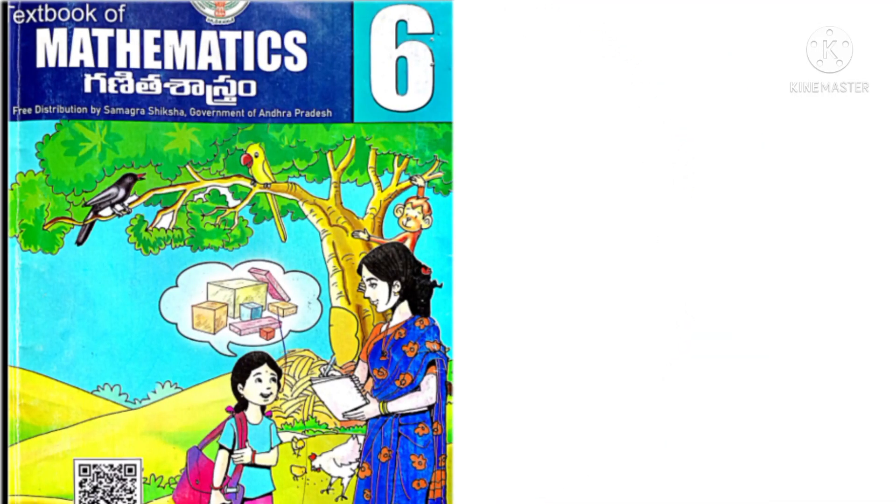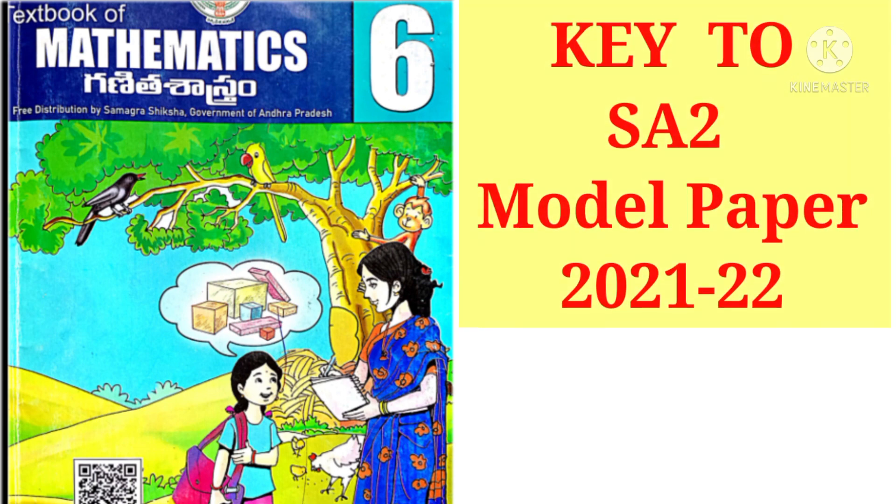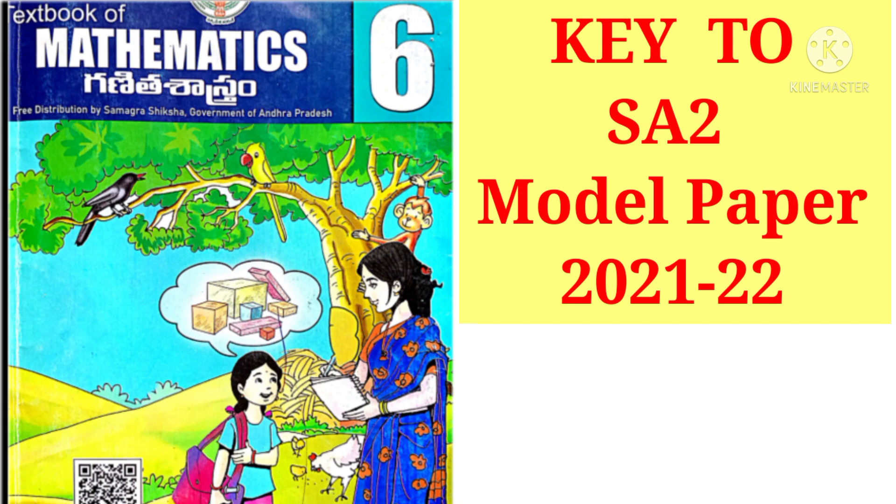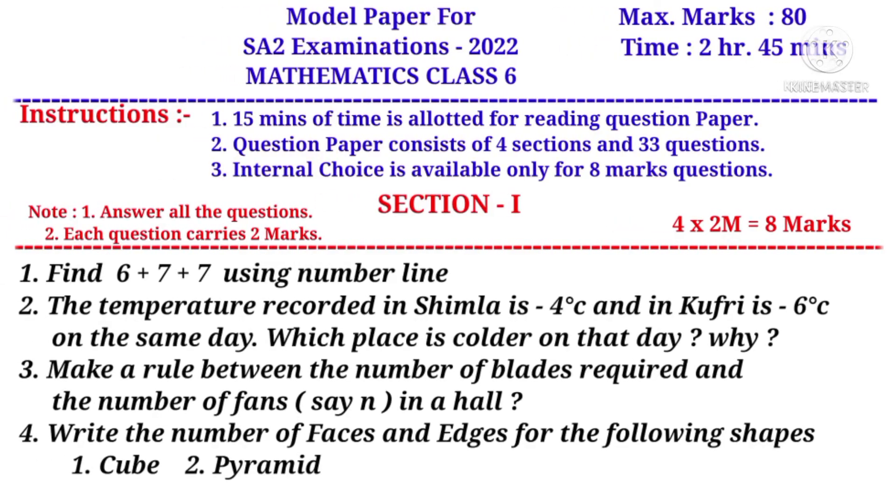Welcome to Shaker Maths. Today we are going to learn 6th class Mathematics Key to SA2 Model paper 2021-22 prepared by me from question number 1 to question number 9. Now let us see the model paper. Section 1, first question: find 6 plus 7 plus 7 using number line.